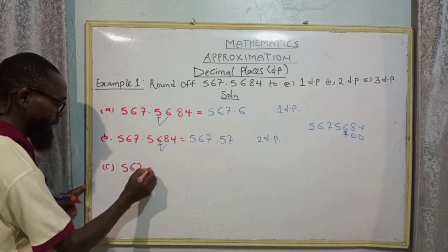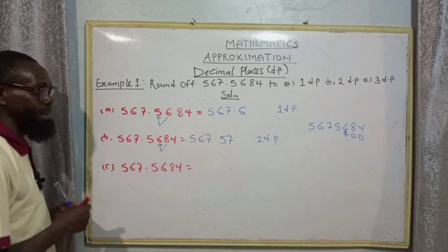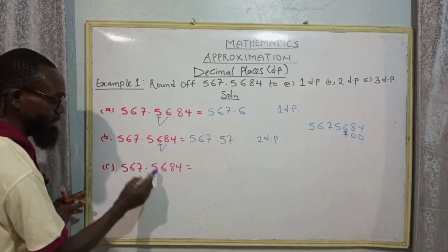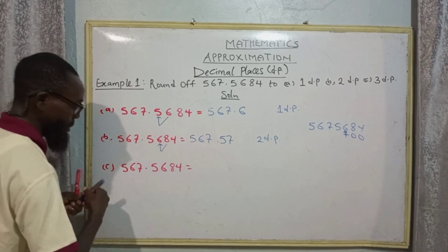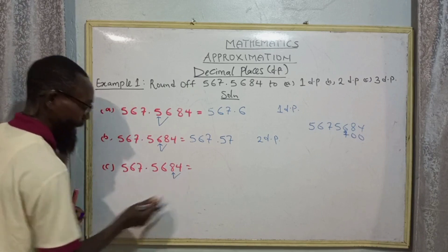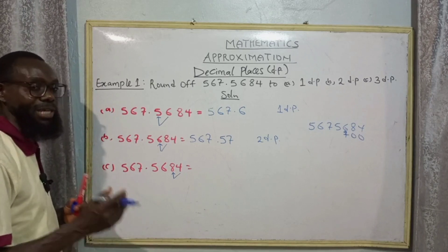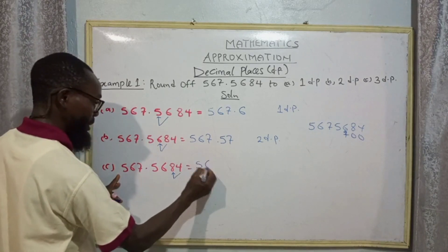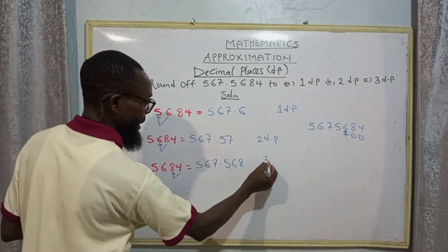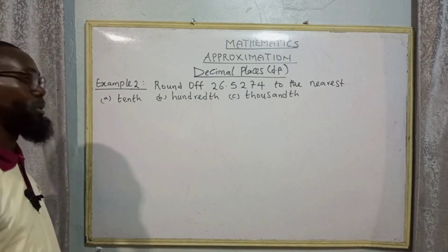For three decimal places, we have 567.5684. Count the first decimal place, second, and third — so eight is the third decimal place. When we look at the digit to the right, we have four. Four is a number between zero and four, so you round down to zero. We are going to have 567.568 to three decimal places.